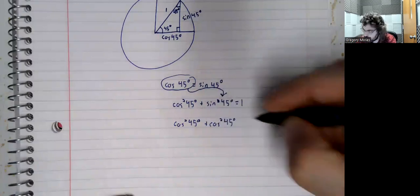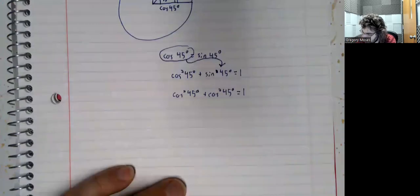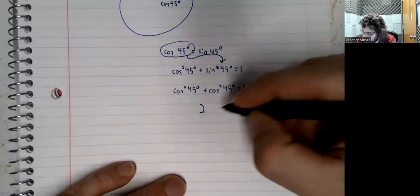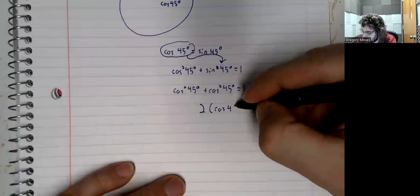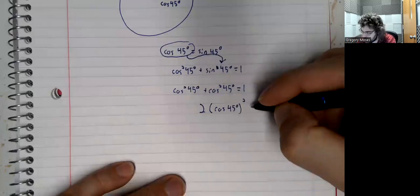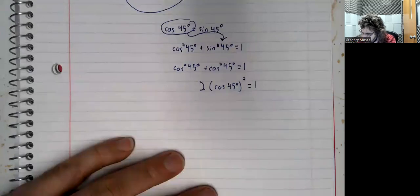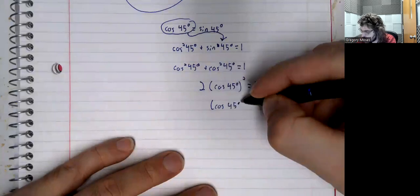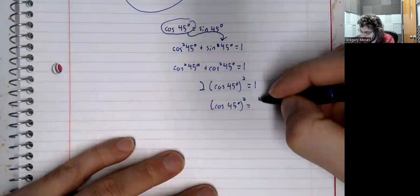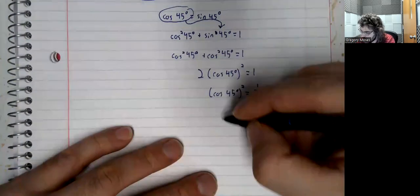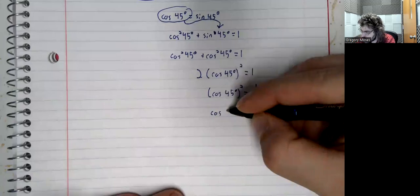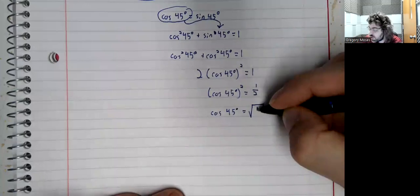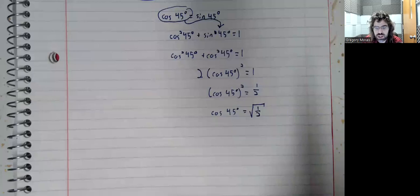So rewriting this a little, 2 times the cosine of 45 degrees squared equals 1. The cosine of 45 degrees squared equals 1 half. And the cosine of 45 degrees is the square root of 1 half. This has two solutions, the positive square root or the negative square root.